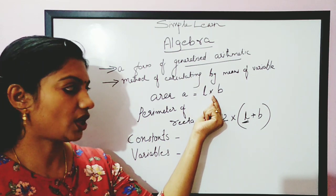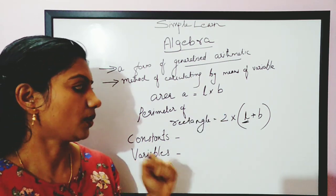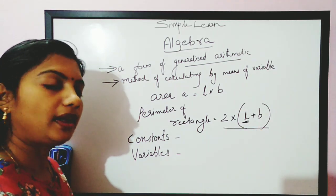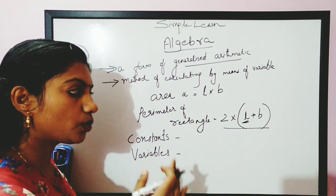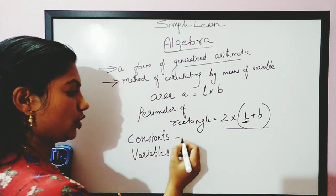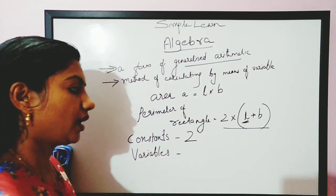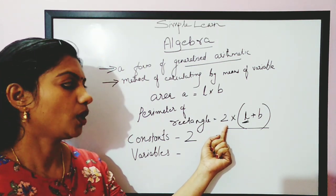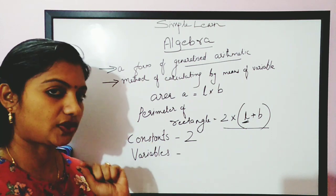Here the area is also going to change with respect to L and B. So let's take 2 into length plus breadth. What is 2? 2 is not going to change — 2 is 2. We call it a constant. Something which does not change its value. We cannot change the value of 2, so they are called constants.